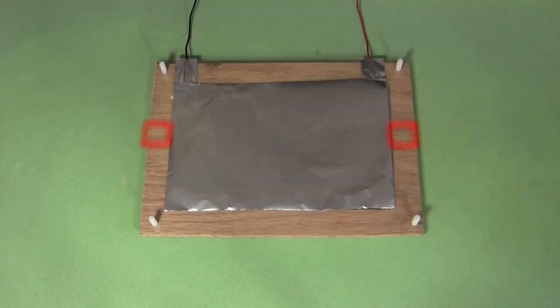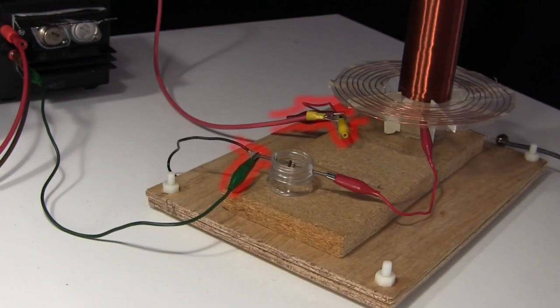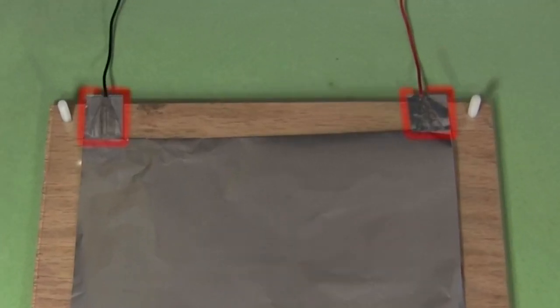Usually you'd see the tabs at opposite ends of the capacitor. But for my Tesla coil, the connections from the power supply and ground are both on the back side, and you want to keep the wiring as short as possible. So having both tabs on the same side works well for me.